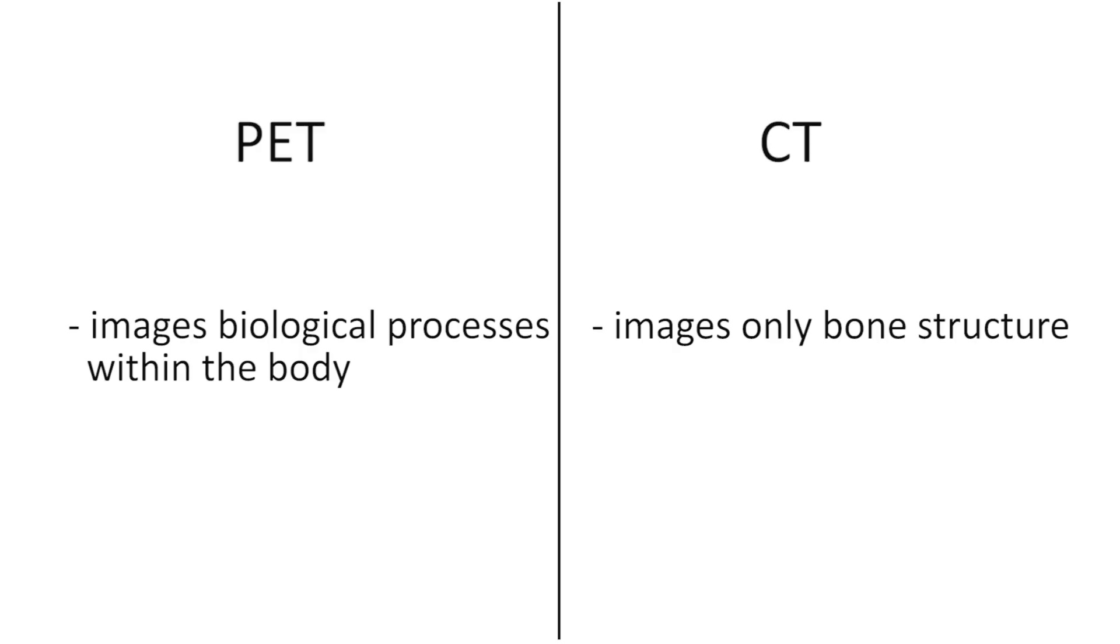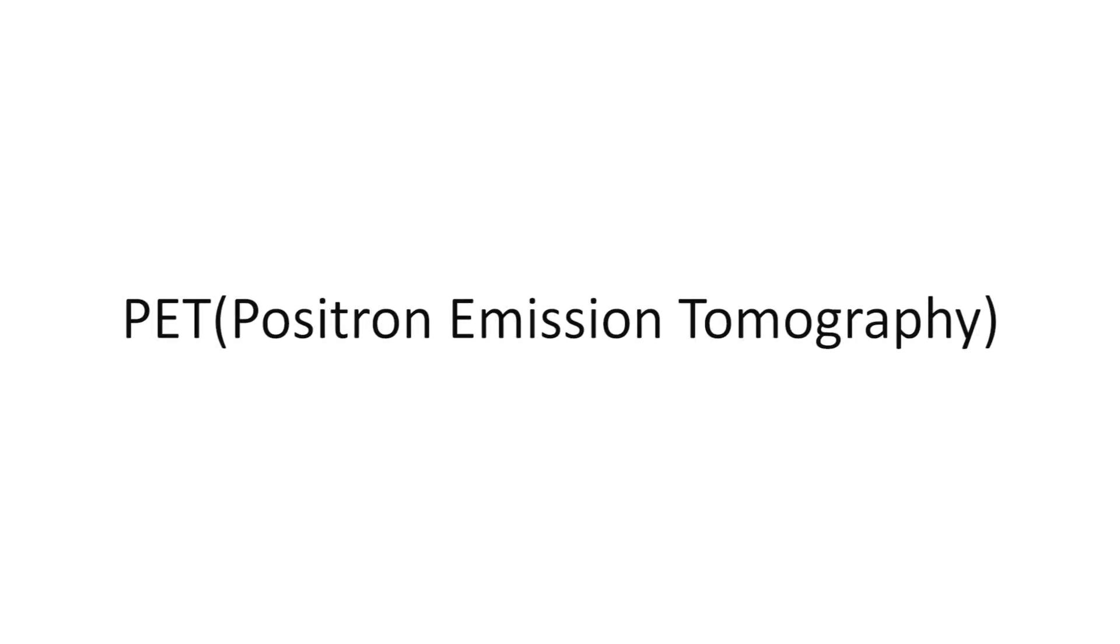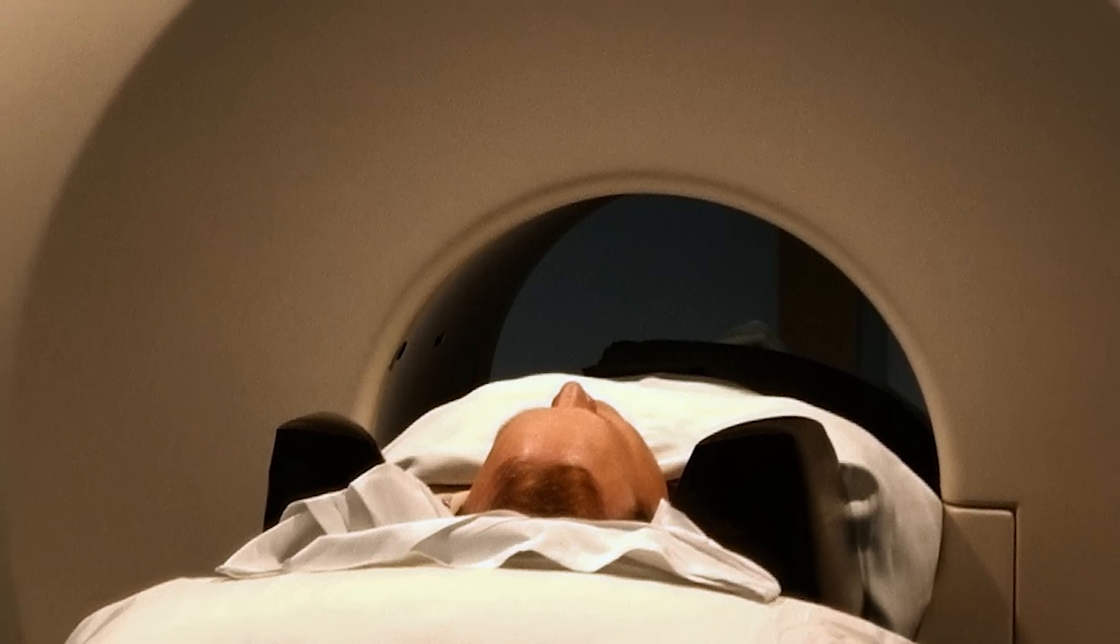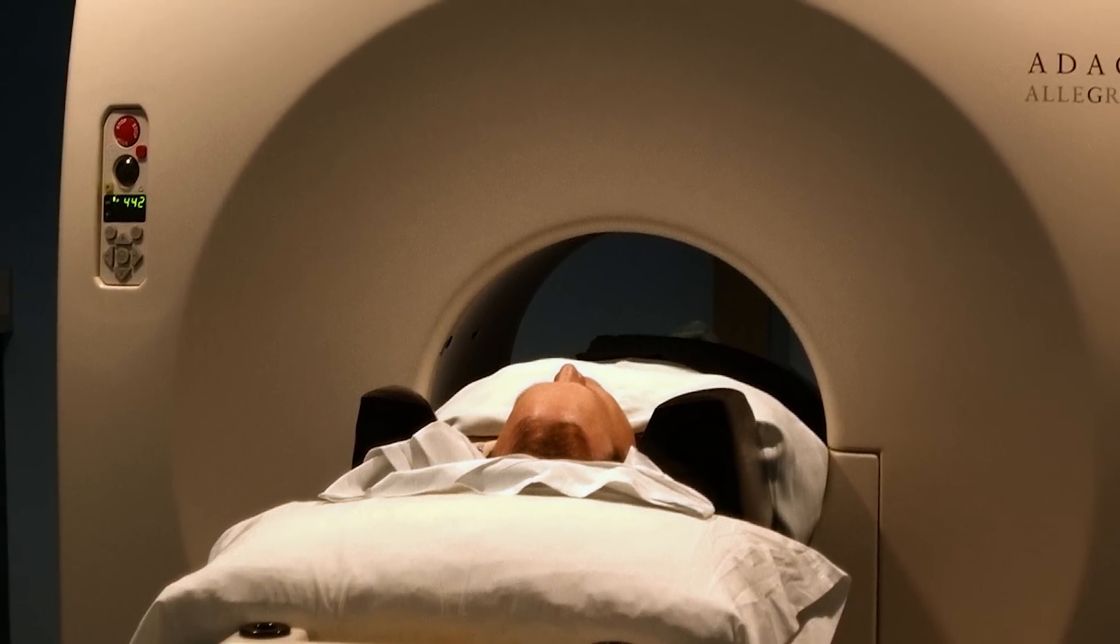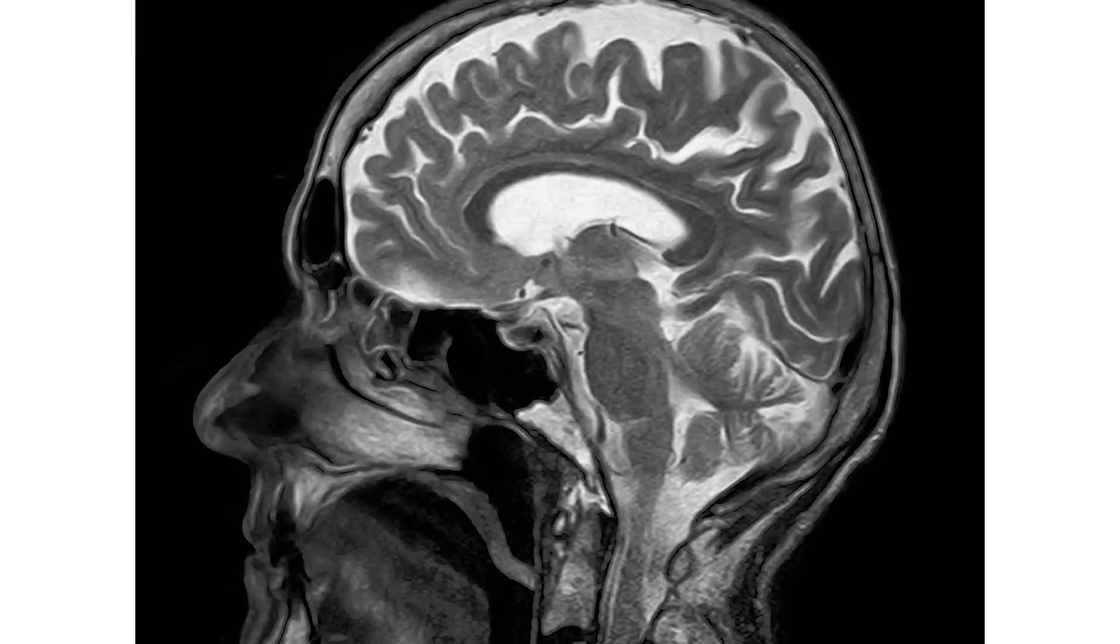Unlike CT scans which can only image bone structure, in positron emission tomography scans or PET scans, radioactive tracers that emit positrons are used, which are tracked by the system to generate a 3D image over time.